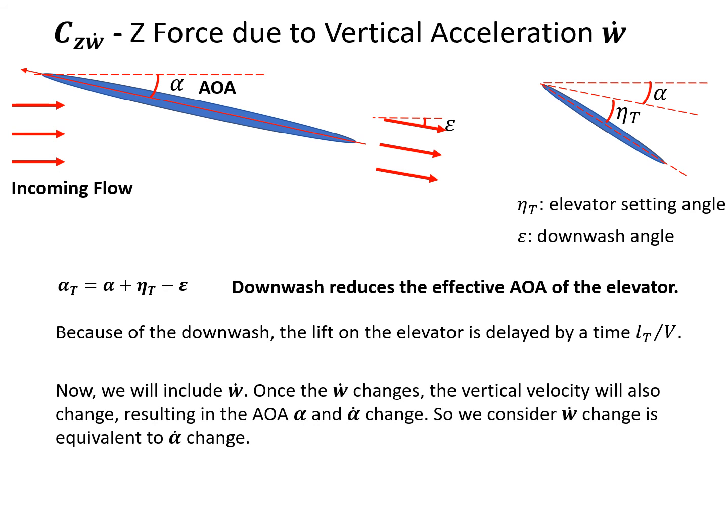Now we include W-dot, or vertical acceleration. Once vertical acceleration changes, the vertical velocity will also change, and that W-dot change will result in an angle of attack change and an angle of attack rate change. So W-dot change is considered equivalent to alpha-dot change. In the derivation, instead of deriving Czw-dot directly, we will derive Cz-alpha-dot — they are equivalent terms.